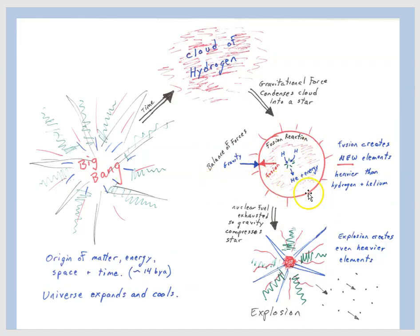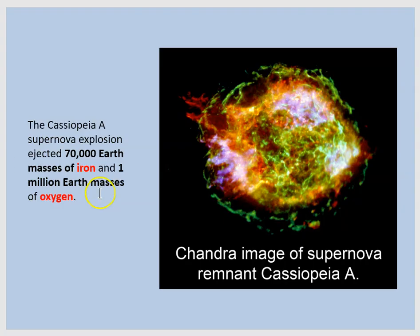So planets owe their existence to the earlier work of stars. Returning to our story, when stars exhaust their fuel, if they're big enough, they can undergo a colossal explosion called a supernova.